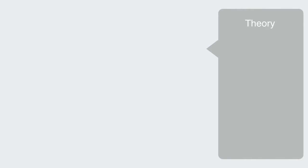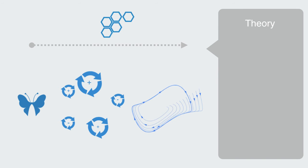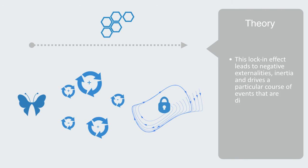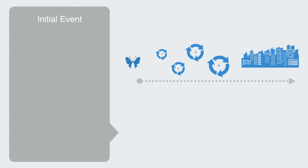The basic theory of path dependency is that it is the product of a self-organizing process, where some small initial event — that is often somewhat arbitrary in nature — comes through positive feedback to create a lock-in effect. This lock-in effect leads to negative externalities, inertia, and drives a particular course of events that are difficult to change in the future. Path dependency maintains that the starting point, as well as feedback loops along the way, affect and shape the end outcome to the technologies of today. In the language of chaos theory, this is called sensitivity to initial conditions.